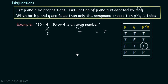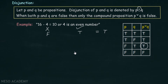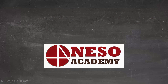That's all about the three logical operators: negation, conjunction, and disjunction. In the next lecture, we will cover the rest of the operators. Till then, have fun and keep practicing. Thank you.